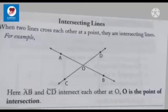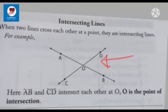Now we will learn about intersecting lines. When two lines cross each other at a point, they are called intersecting lines. For example, line AB and line CD are intersecting lines. Here, line AB intersects line CD at point O, and O is the point of intersection.